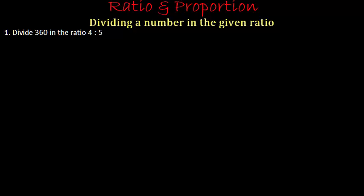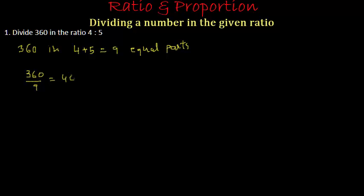In the first problem we have to divide 360 in the ratio of 4:5. This ratio is already in the simplest form — both numbers are integers and both are co-prime. So the ratio 4:5 is already in its simplest form. Now, to divide 360 in the ratio 4:5, we first divide 360 into 4+5 = 9 equal parts. To do that, we divide 360 by 9, which equals 40. So the value of 1 part is 40.